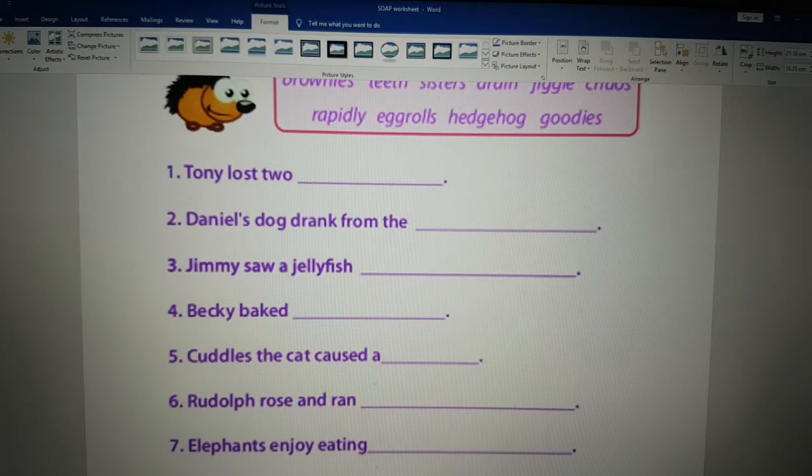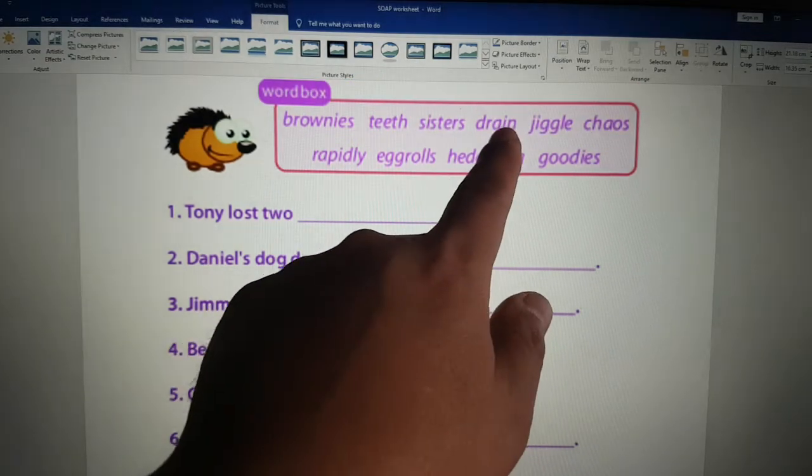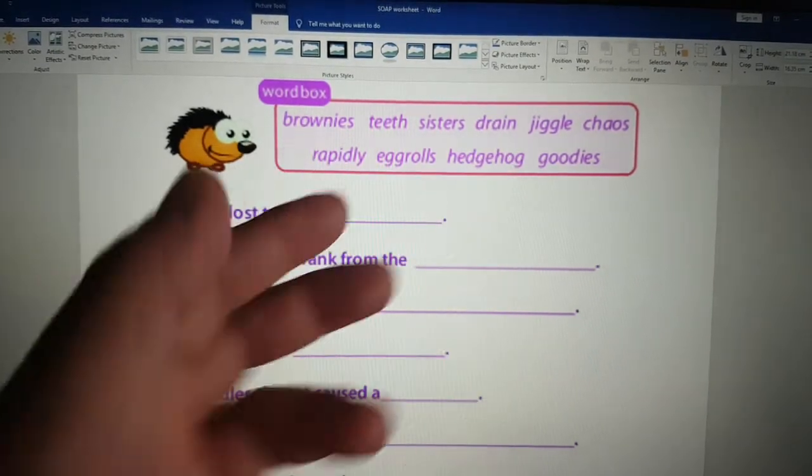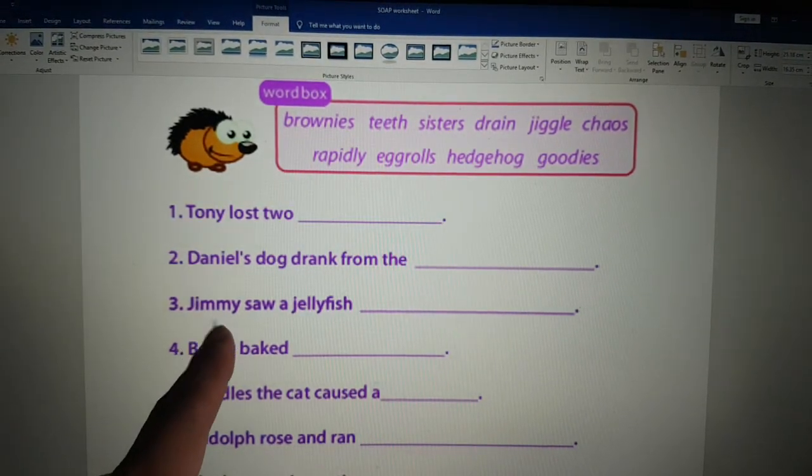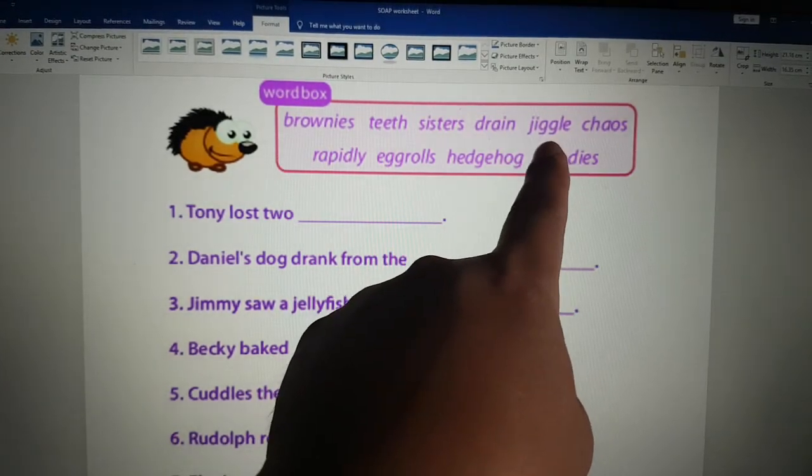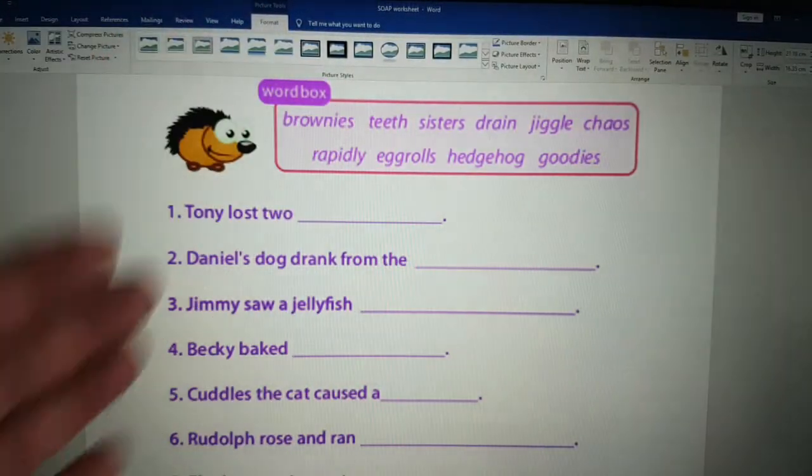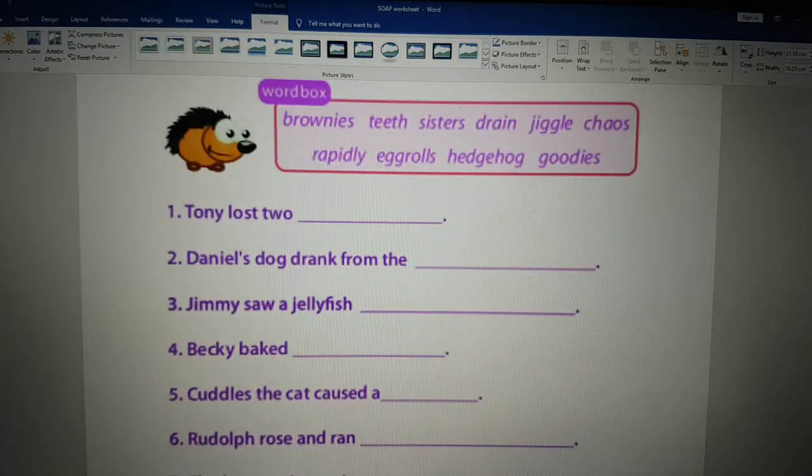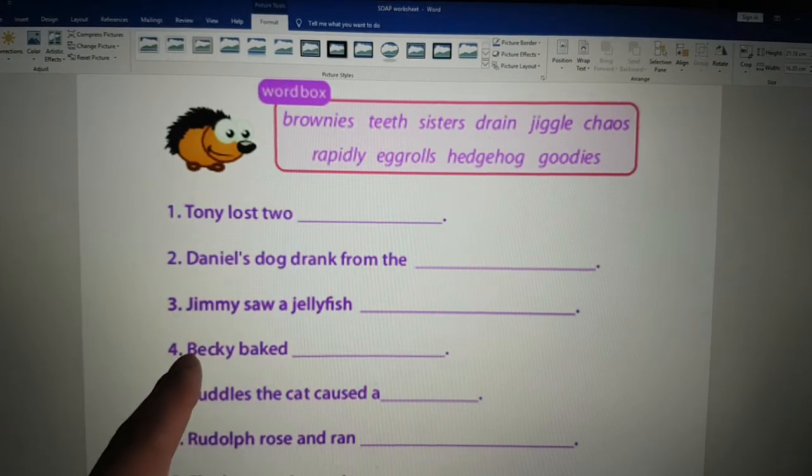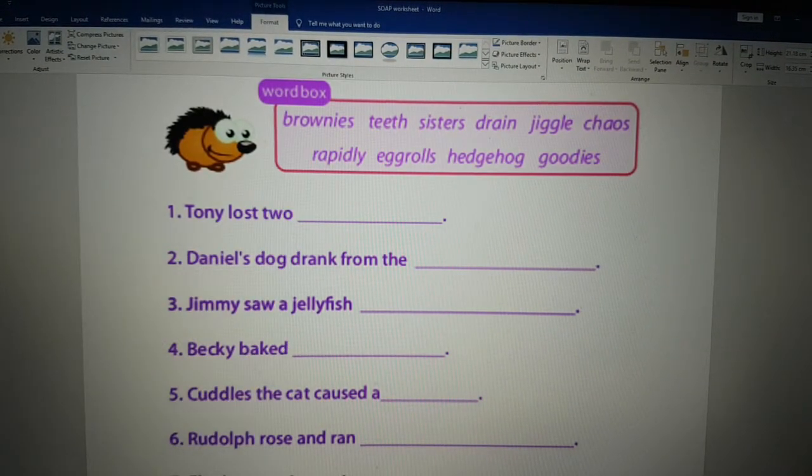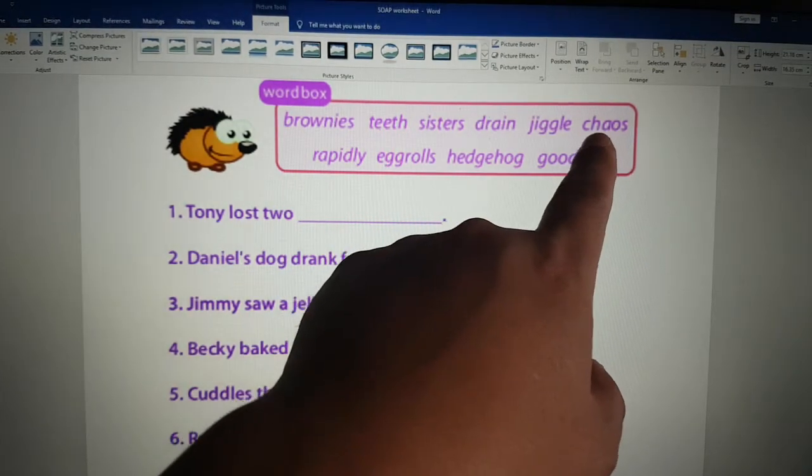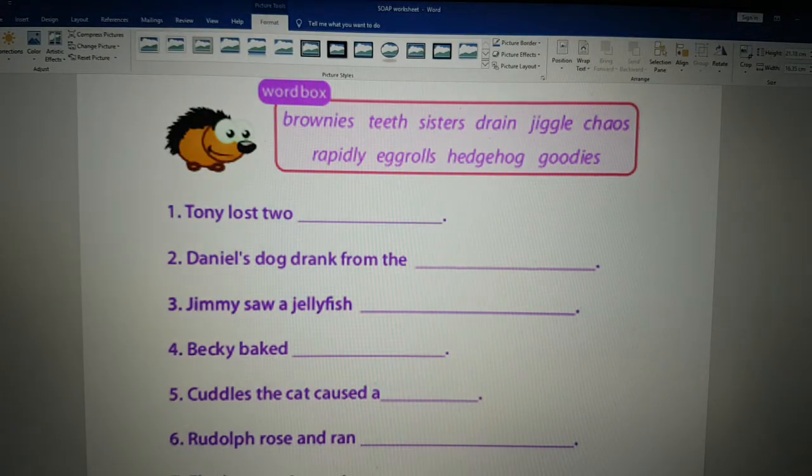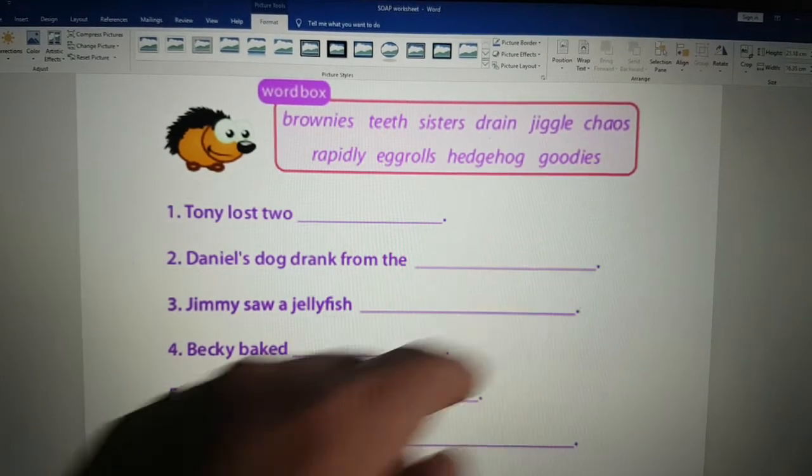And here are the answers. Daniel's dog drank from the drain. Jimmy saw a jellyfish jiggle. Jiggle is that movement of jiggle, jiggle, jiggle. Becky baked brownies. Cuddles the cat caused a chaos. So we have a cat called Cuddles and it made a big mess. Cuddles the cat caused a chaos. A big mess, basically. If your teacher left the classroom and the students are on your own, you will have a big chaos.